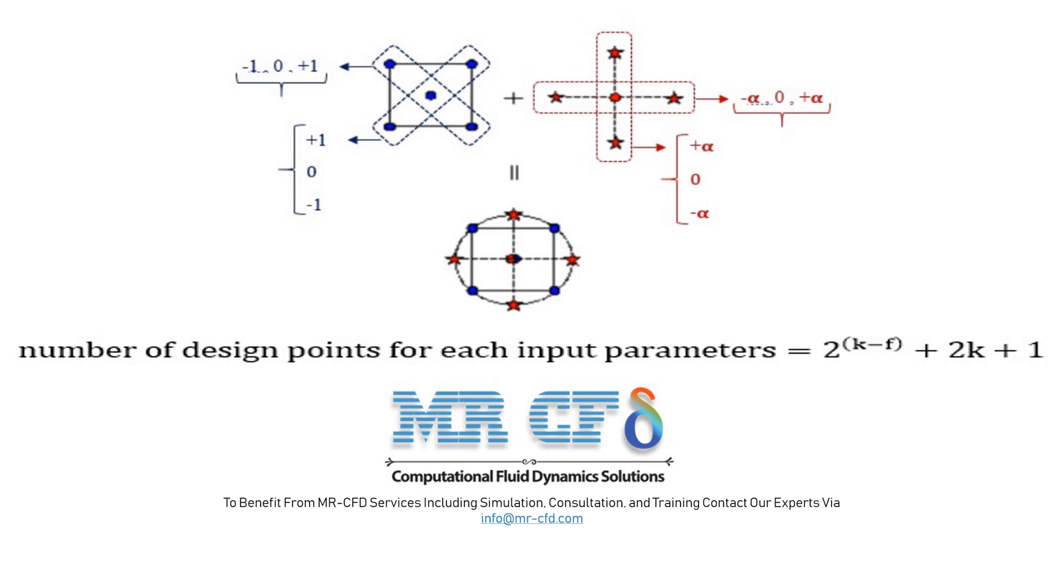In other words, in the Central Composite model or CCD, there is a central point in the middle of the input parameter space, 2k points called the axis specific to each input parameter located at the same points as plus alpha and minus alpha, and the 2 power (k minus f) points are called the factorial points on the space diameters of the input parameters, which are the same points plus 1 and minus 1.